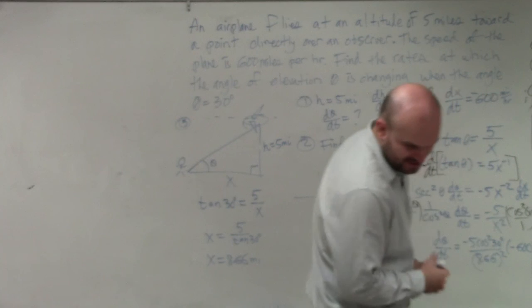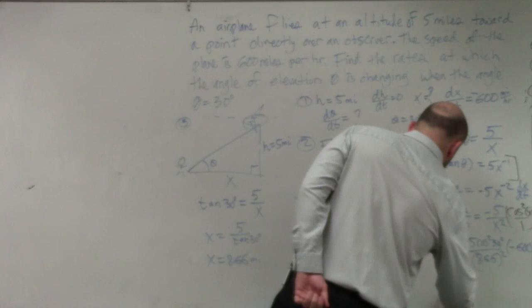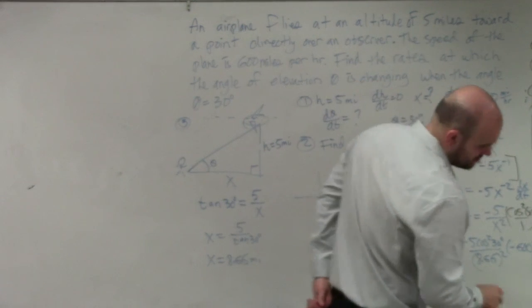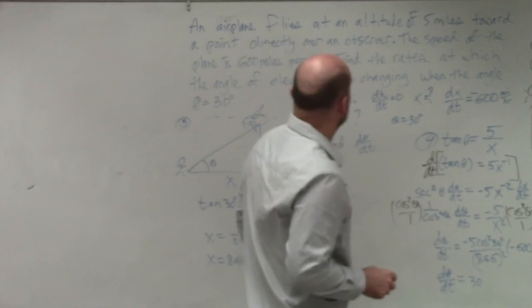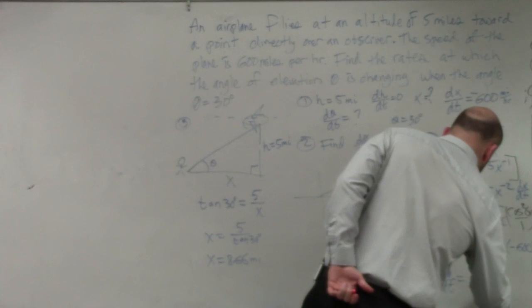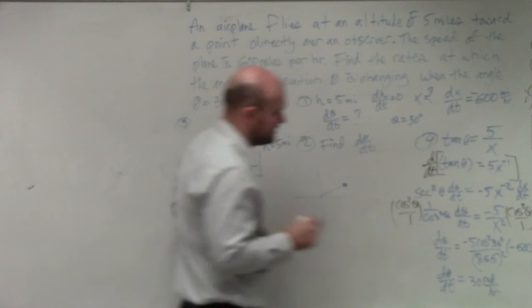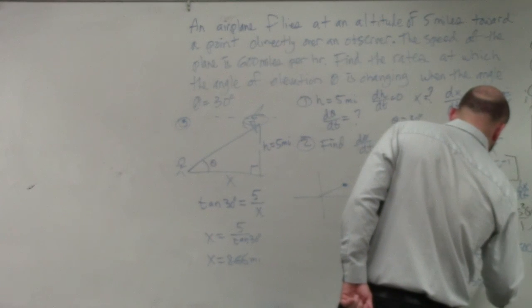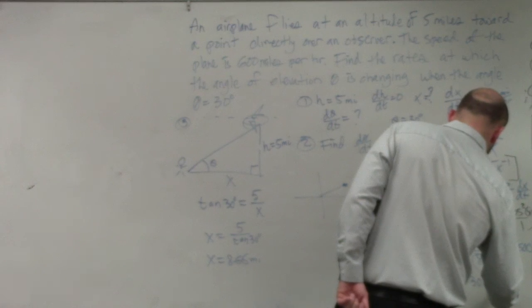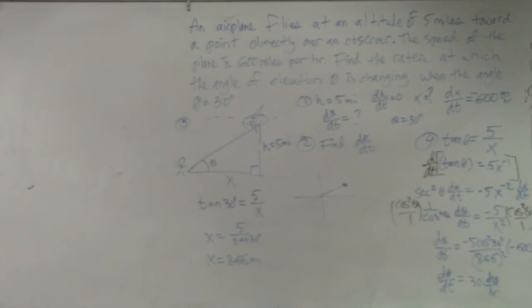And when I go ahead and multiply all of this out, I get my d(theta)/dt is 30 radians per hour. Or I could say in degrees. It's degrees per hour. Yes? That's 600, yes. Because you're traveling to the left.